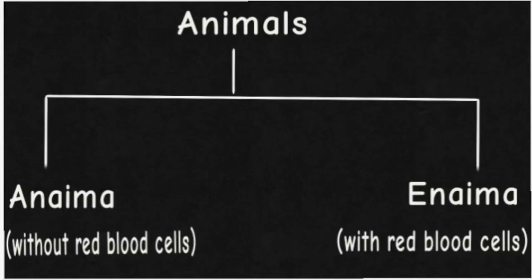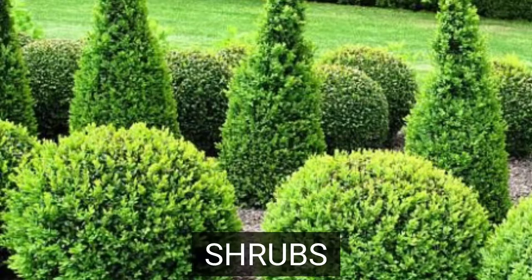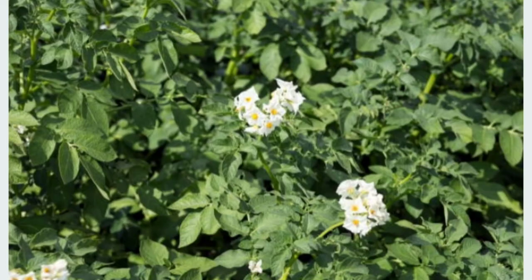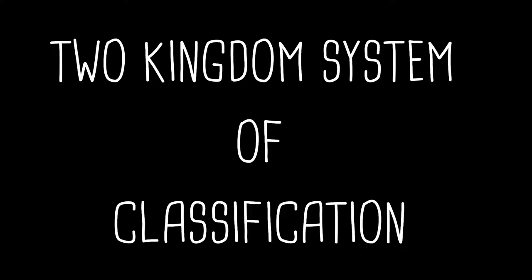Aristotle classified animals into two groups — anaima and enhaima — on the basis of the color of their blood. Theophrastus, around 370 BC, classified plants into herbs, shrubs, undershrubs, and trees. He is also known as the father of botany and father of ancient taxonomy. As Aristotle's pupil, Theophrastus made several other important botanical distinctions and observations.